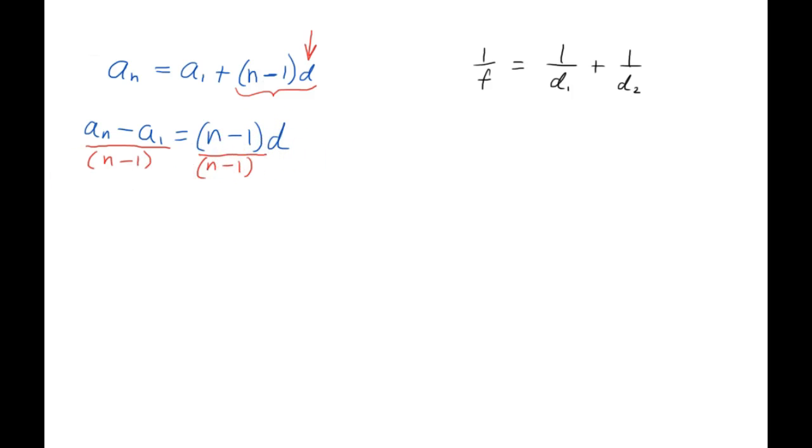So what we'll have then in this step and after that is a sub n minus a sub 1 over the quantity n minus 1 equals d. So we have isolated d and everything on the left hand side is what equals d.